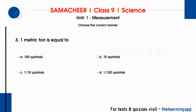Third question: one metric ton is equal to — options are A) 100 quintals, B) 10 quintals, C) 1/10 quintals, D) 1/100 quintals. One quintal is equal to 100 kilograms, and one metric ton is equal to 1,000 kilograms. Therefore, the correct answer is option B: 10 quintals.